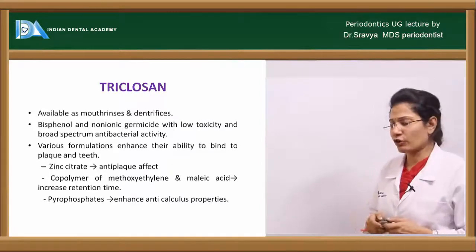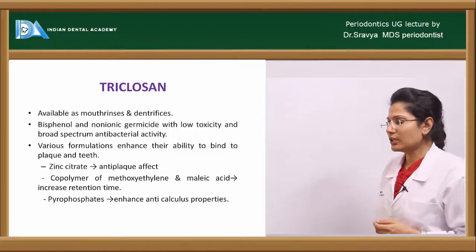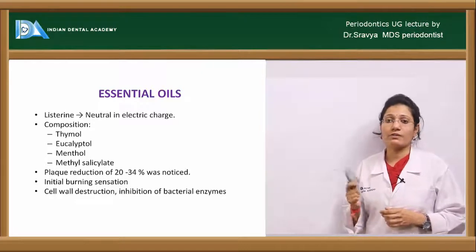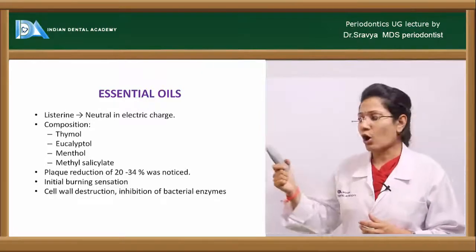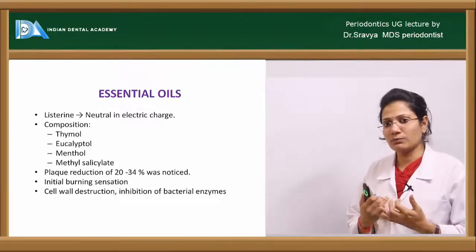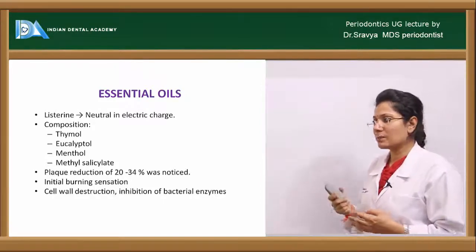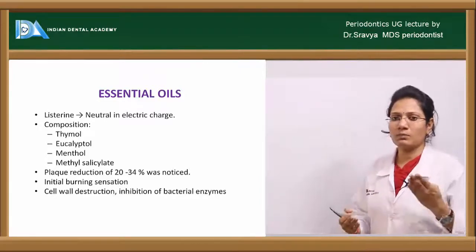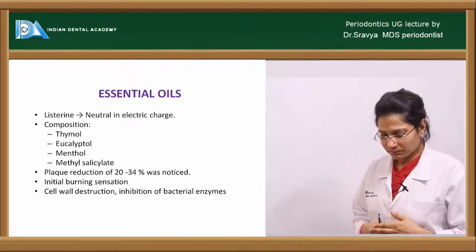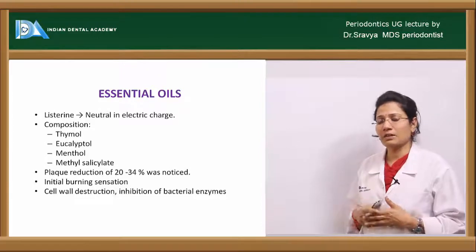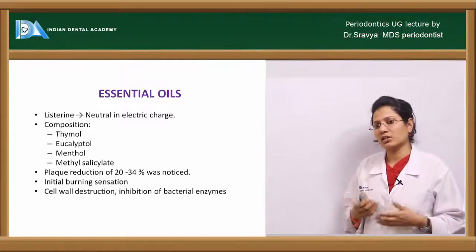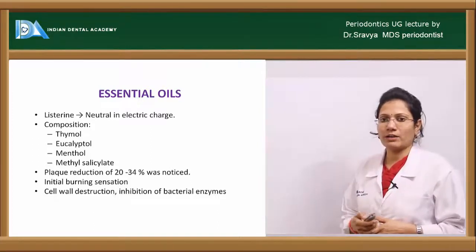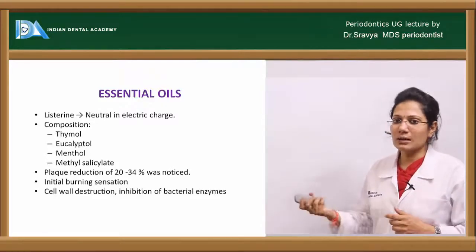Incorporating pyrophosphate also enhances anti-calculus properties. Of the essential oils, the most important FDA-approved one is Listerine, which contains thymol, eucalyptol, menthol, and methyl salicylate. Plaque reduction is about 20 to 34%, but it requires use about four times daily, reducing patient compliance. Some patients report an initial burning sensation. Its mechanism of action involves cell wall destruction and inhibition of certain bacterial enzymes.